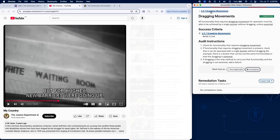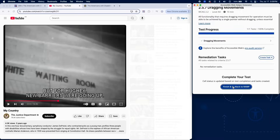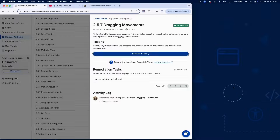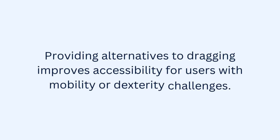If dragging is the only method to operate the functionality and it is not essential, add a failure in RAMP. Providing alternatives to dragging improves accessibility for users with mobility or dexterity challenges.